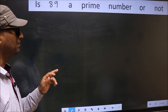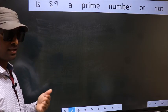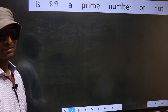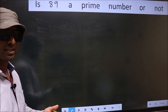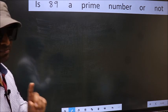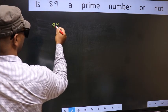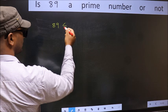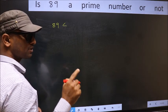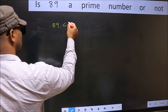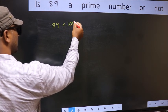Is 89 a prime number or not? To check whether 89 is prime or not, for that step 1. Given number is 89. This is close to which perfect square number? This is close to perfect square number 100.